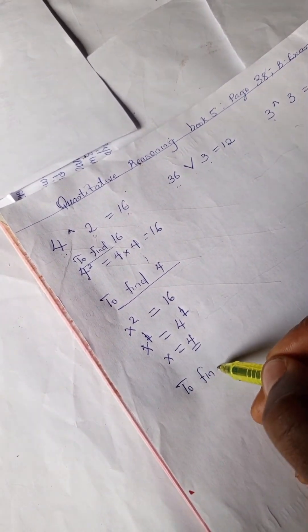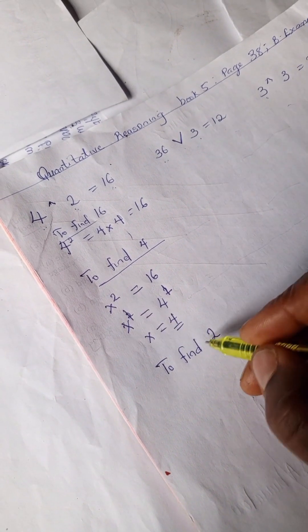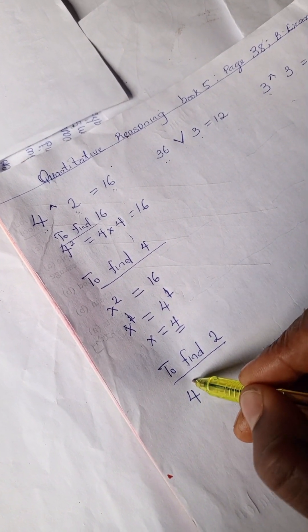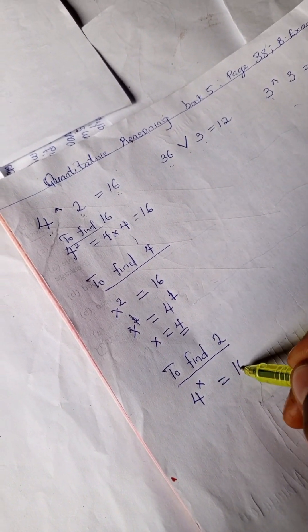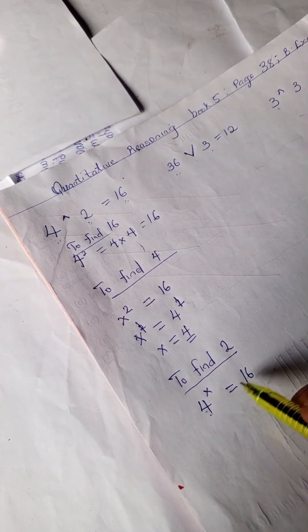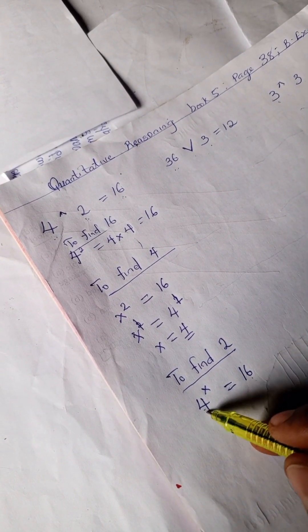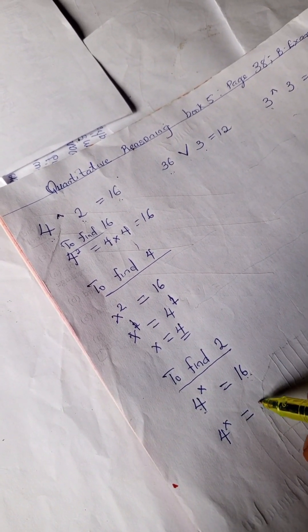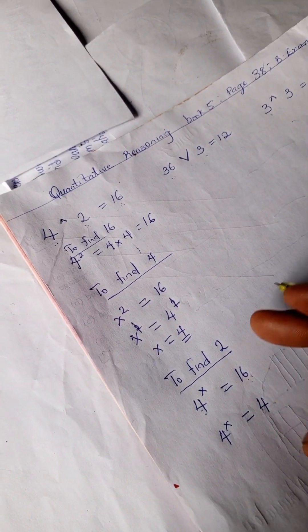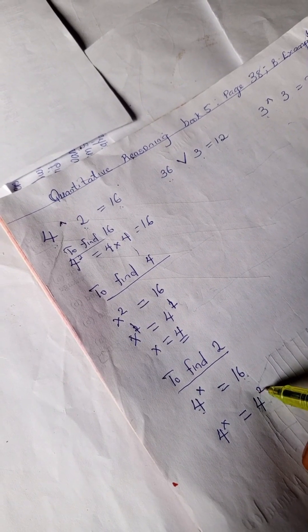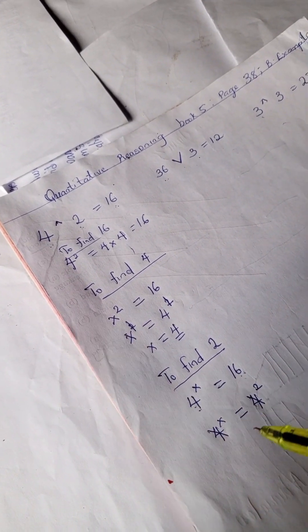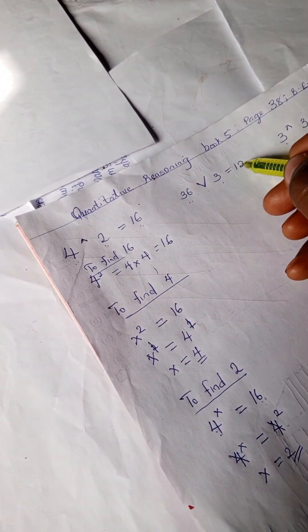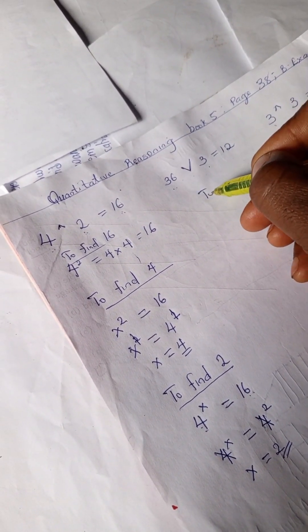Next, to find the unknown, we have 4 to the power of x equals 16. We're going to make this side, both sides equivalent, which means we're going to get the base 4 and 4 here. So we have 4 raised power of x equals 4 raised power 2. Our 4 will cancel out on both sides, so our x equals 2. That's how we get our 2.